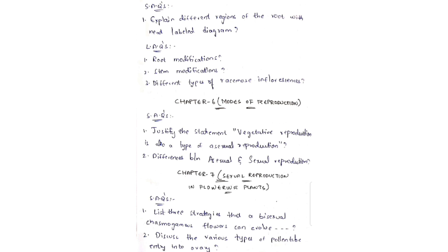Chapter 5 LAQs: root modification, stem modification, and different types of racemose inflorescence. If you read these three questions, definitely one of them will appear in your exam compulsory. So if you write one of these three questions, 8 marks will be in your hands.